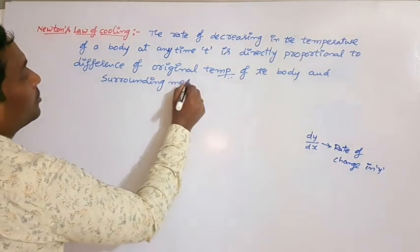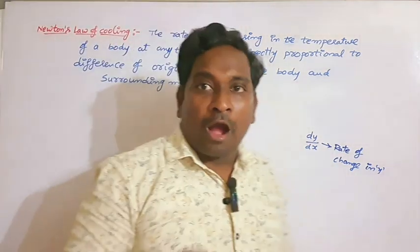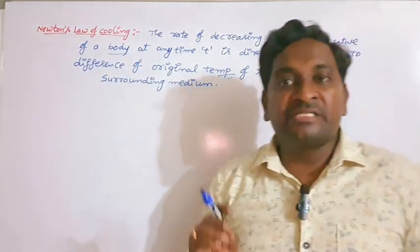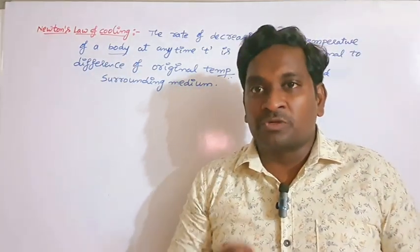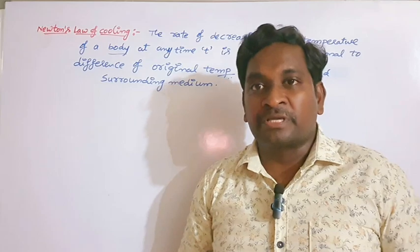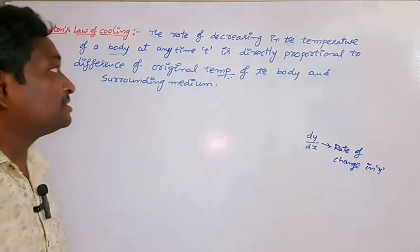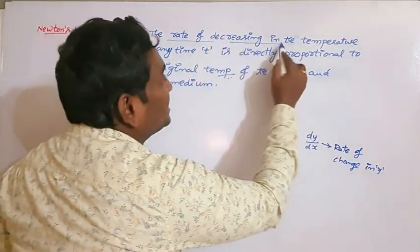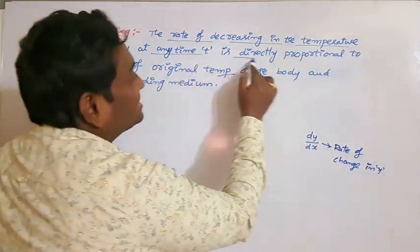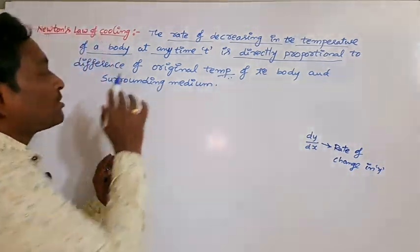The surrounding medium, otherwise called room temperature. The rate of decreasing in the temperature of a body at any time t is directly proportional to the difference of the original temperature of the body and the surrounding medium, or room temperature.